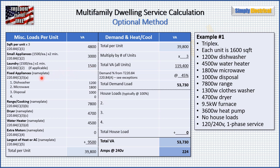Then we go to fixed appliances: dishwasher, microwave, and disposal with their listed values. We have a range — nameplate 7,800 watts. Dryer at nameplate 4,700 watts. Water heater at nameplate 4,500 watts. No extra motors. For heating and cooling, we have a 9.5 kW furnace and a 3,600 watt heat pump — so we take the furnace at 9,500 watts. Totaling the column, we get 39,800 VA per unit. We slide that number up and multiply by 3 units, giving us 119,400 VA total.